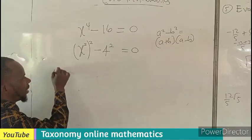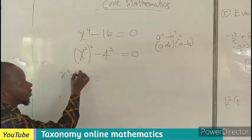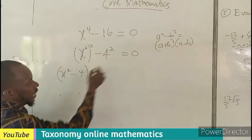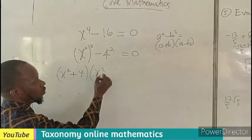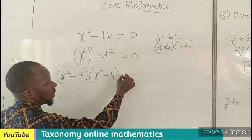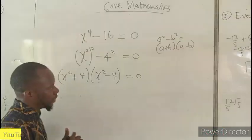So the first number will be x squared plus 4. Since I use plus here, we use plus into bracket x squared minus 4, still equal to 0. So what do we do?